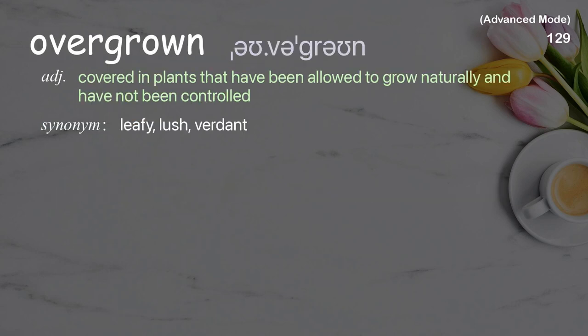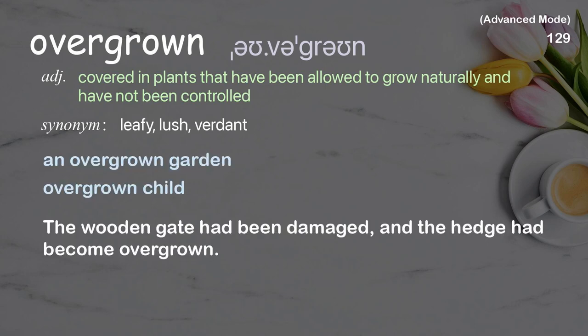Overgrown: covered in plants that have been allowed to grow naturally and have not been controlled. Examples: an overgrown garden, overgrown child. The wooden gate had been damaged and the hedge had become overgrown.